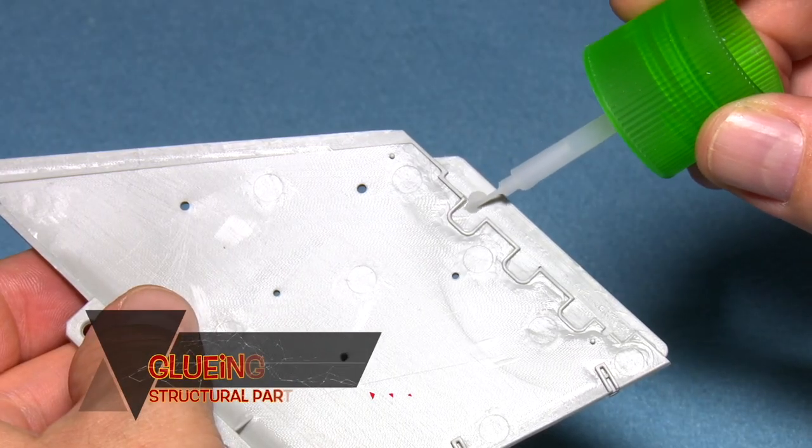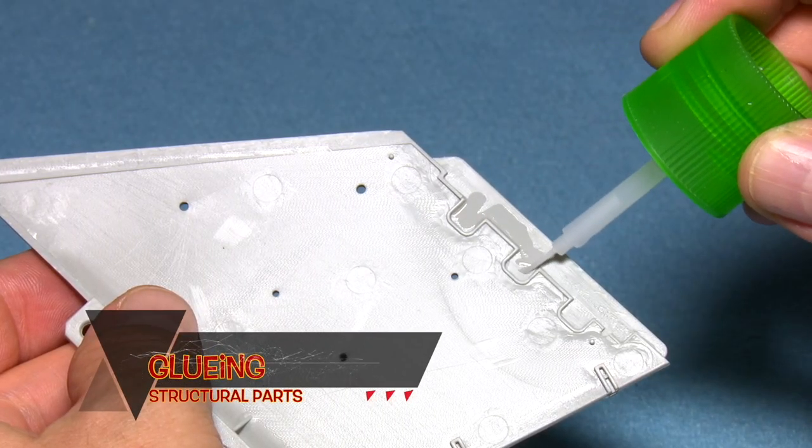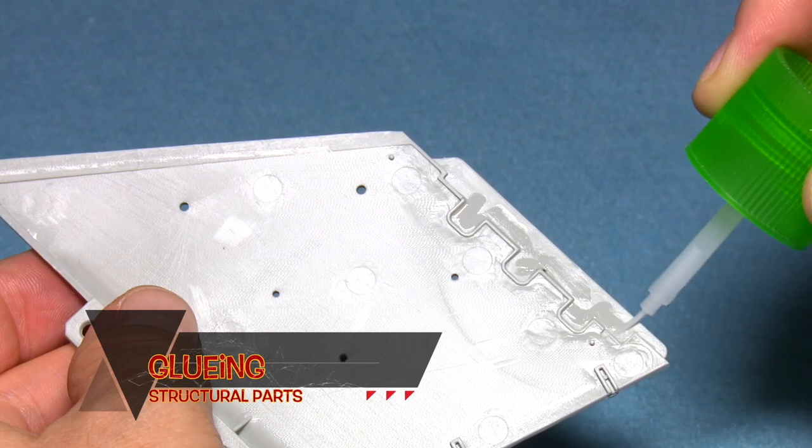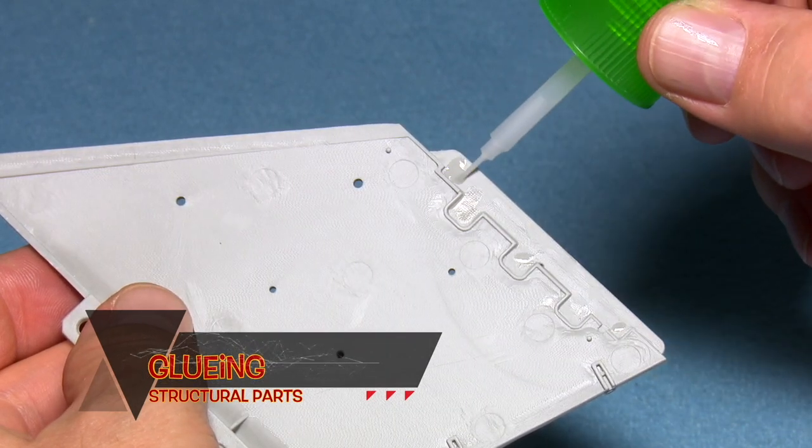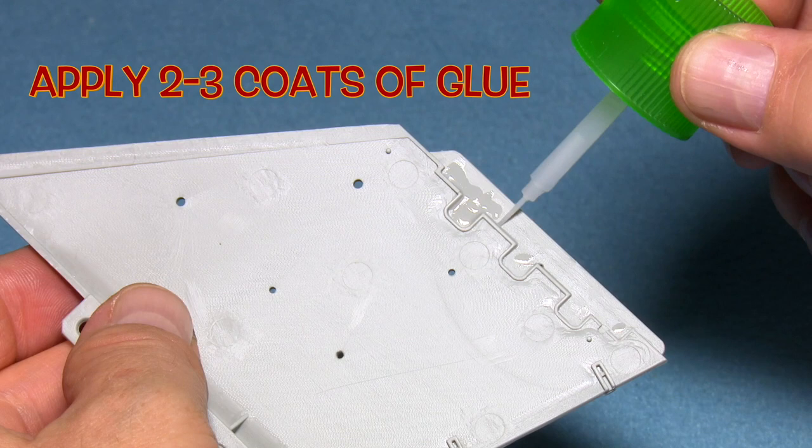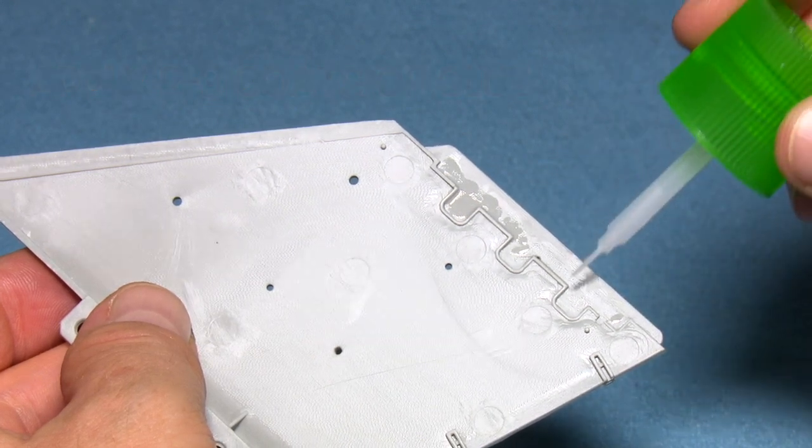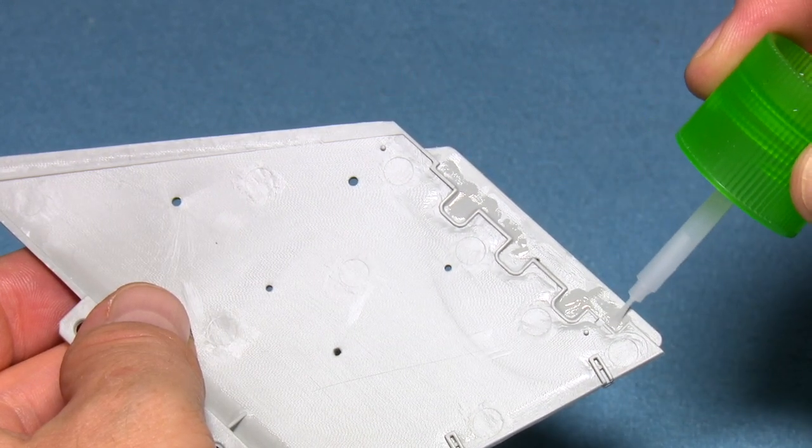When gluing large structural items, it is important that you ensure that the bond is strong. Here you can see one half of a MiG-29 wing, which will then be mated to the second half.